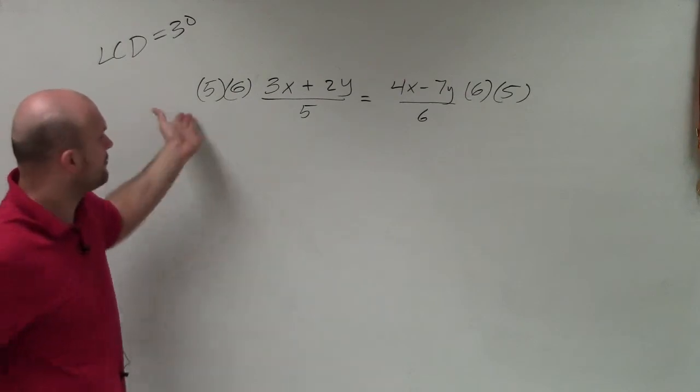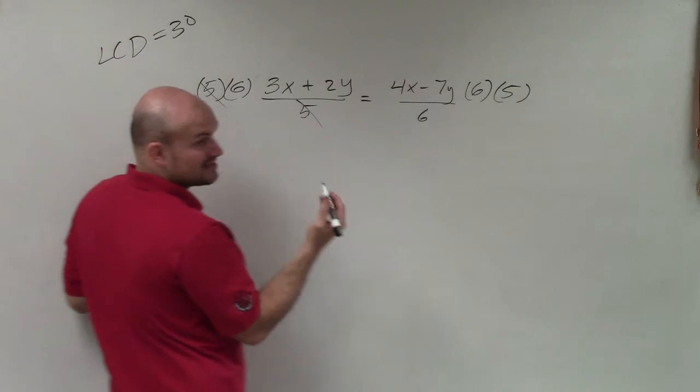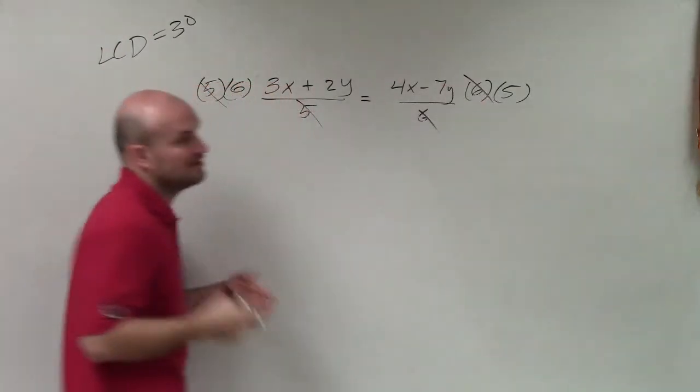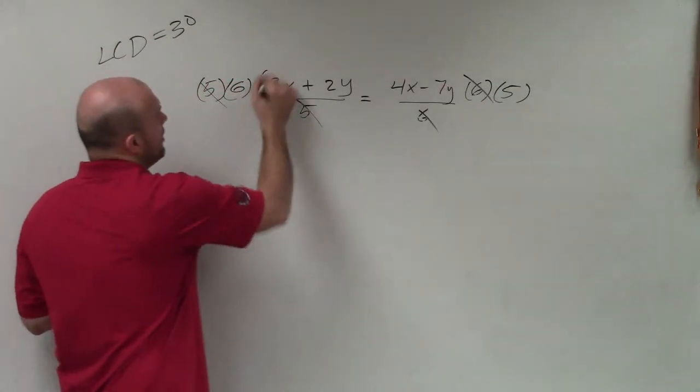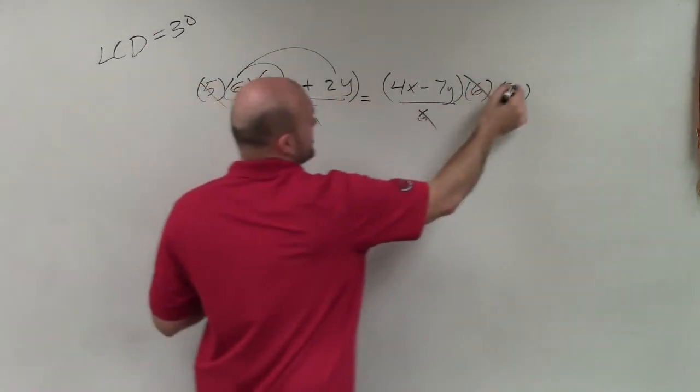Now what's nice about writing it as 5 times 6 instead of 30, is you can see that the 5s divide out and the 6s divide out into 1. So therefore, now all I need to do is make sure you put parentheses around here, because you have to apply the distributive property.